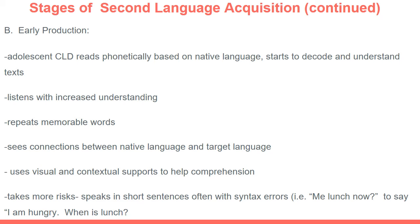Students will see connections between their native language and their target language — recognizing cognates, words that sound the same, look the same, and mean the same across both languages. For example, in Spanish, 'ciencia' is like 'science' in English, or 'matemáticas' is like 'math.' Students will start to recognize those. They'll also begin using visual and contextual supports to aid comprehension — associating a picture in the textbook with a particular word or concept, and paying more attention when the teacher uses gestures to demonstrate a concept.